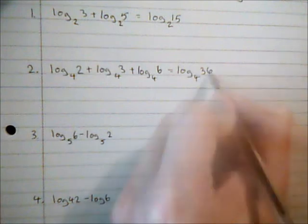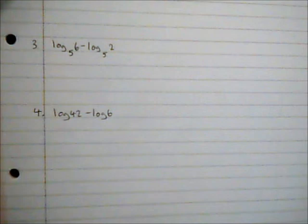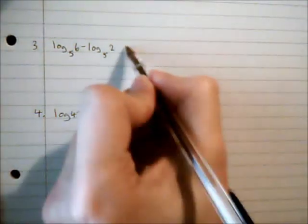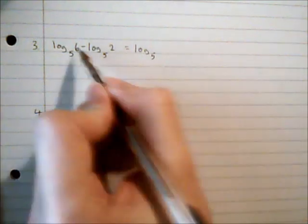What happens when we are subtracting one log from another with the same base? Well we are going to divide. So this is equal to log to the base five of six divided by two which is three.